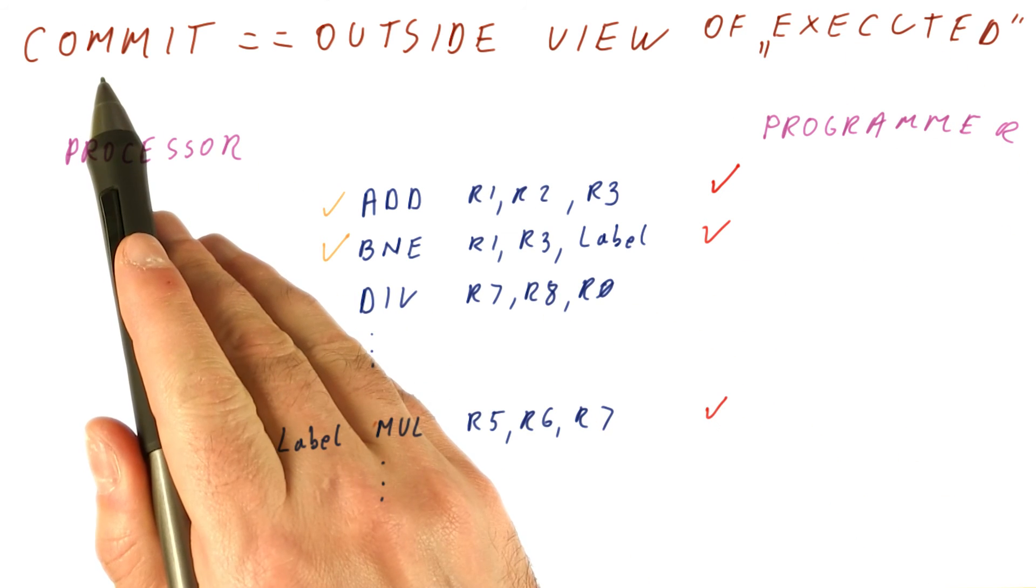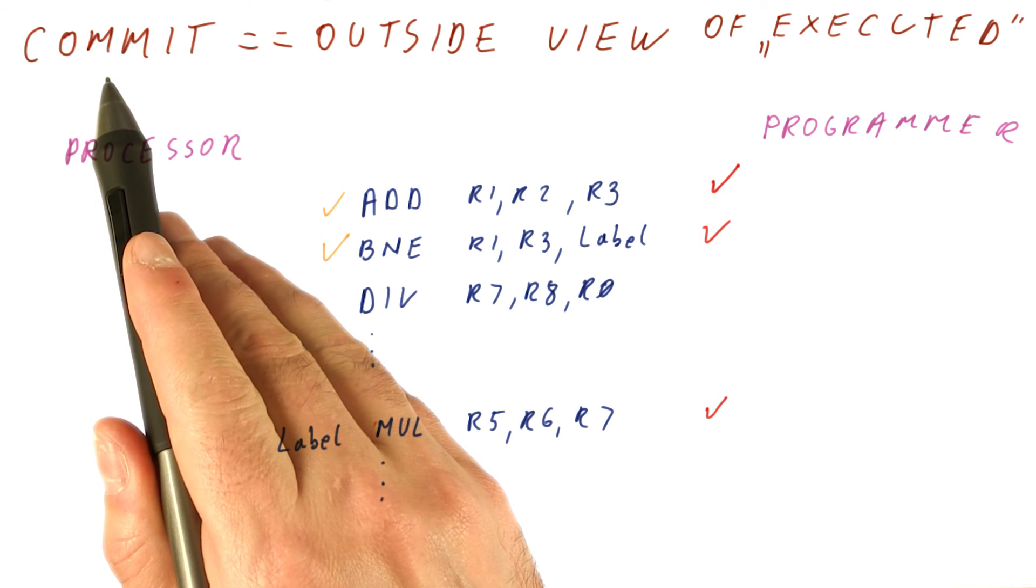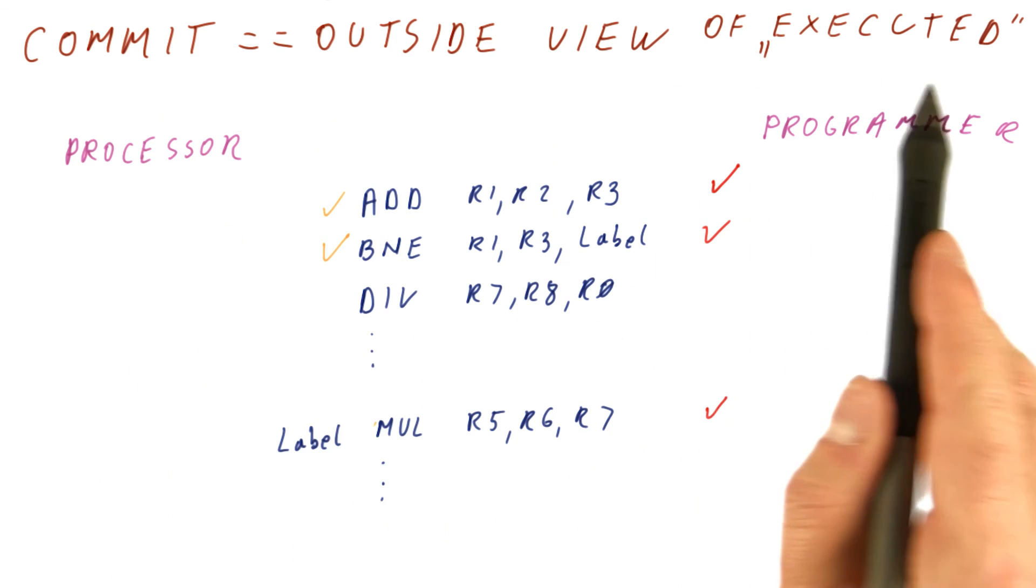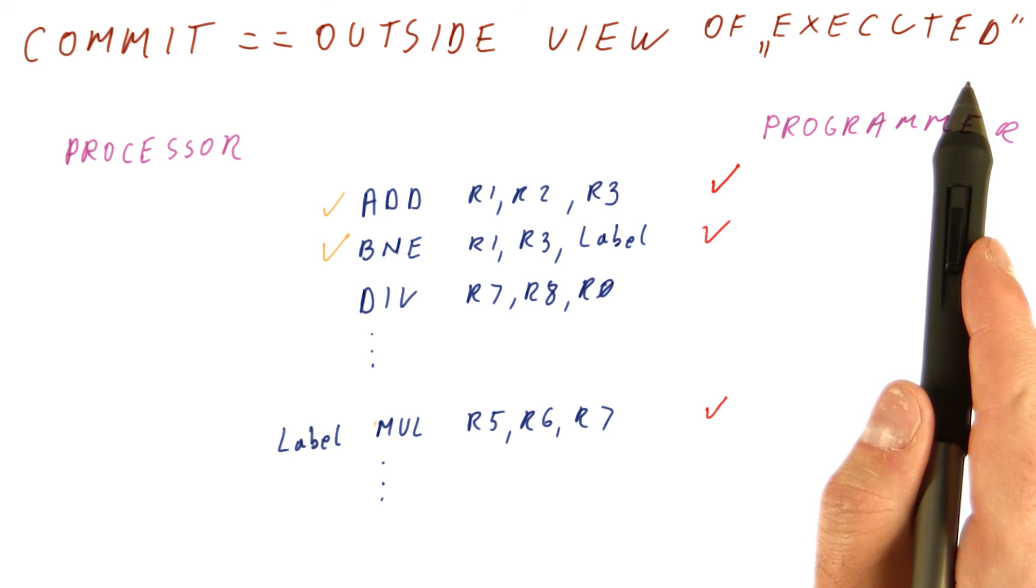So basically, this commit is really kind of the officially executed, whereas the actual execution before we broadcast the result is simply kind of the internal state of the processor that is maybe not reflected to the outside world, until we are sure that everything is fine with the result.